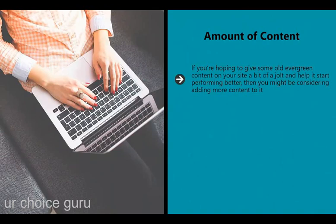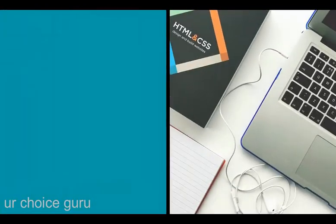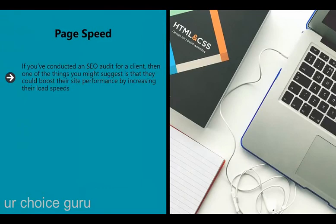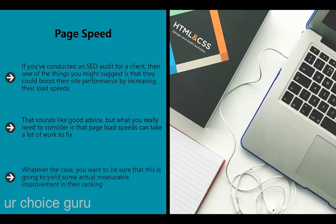Amount of content: if you're hoping to give some old evergreen content a bit of a jolt, you might consider adding more content. Typically the advice is to make posts longer, ranging from 800 to 1,500 words - but that isn't always the case. Before you spend a huge amount of time bulking up old posts, try doing it with just a few and see if it actually helps. Page speed: if you've conducted an SEO audit for a client, you might suggest boosting site performance by increasing load speeds. That sounds like good advice, but fixing page load speeds can take a lot of work - compressing images, deleting plugins, or even changing to a different server. You want to be sure this will yield measurable improvement, so go to the effort on a few pages first.